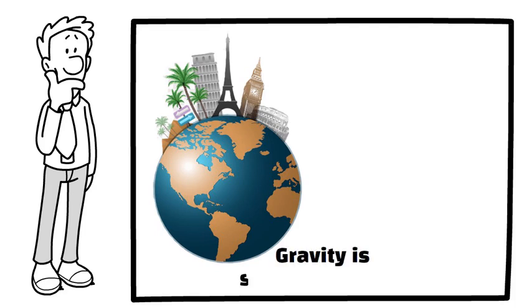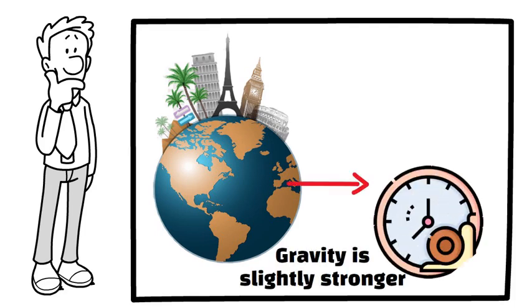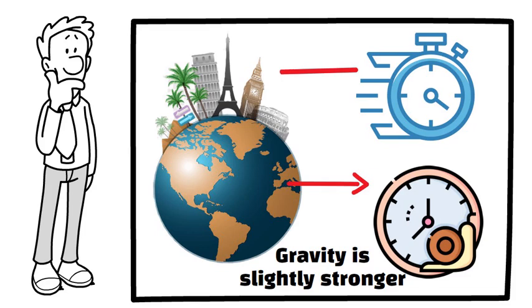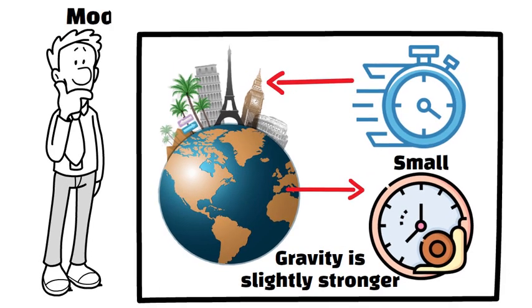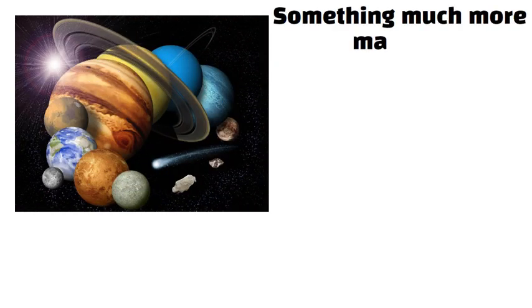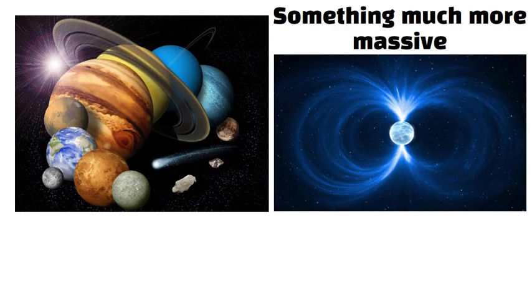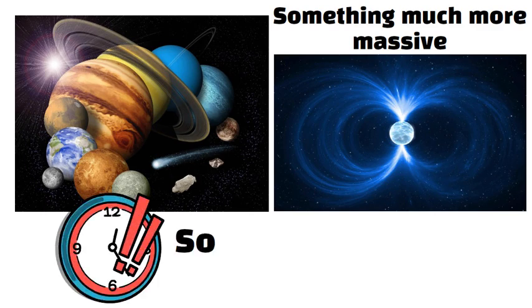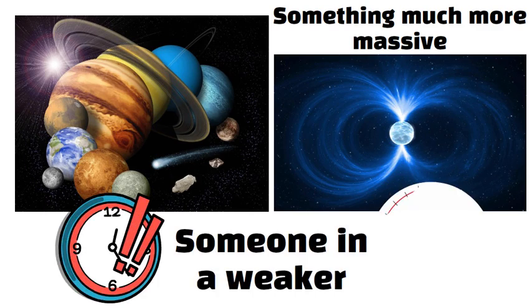A clock on the ground, where gravity is slightly stronger, runs a tiny bit slower than a clock in a high-rise building. The effect is small, but modern atomic clocks can detect it. If you lived on a dense planet, or near something much more massive, like a neutron star, your time would noticeably lag behind someone in a weaker gravitational field.